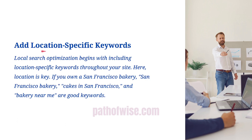The first thing you need to do is add location-specific keywords. Whenever someone searches on Google, Google gives you certain results and you click on them to find answers. The same principle applies here. We are talking about search engine optimization, but focusing on local search. For example, if you run a bakery, you need to use location-based keywords.